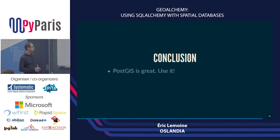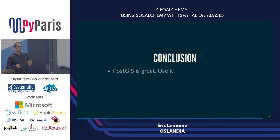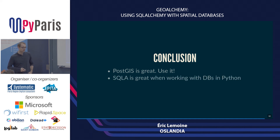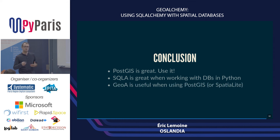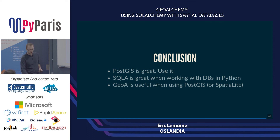In conclusion, PostGIS is great if you have localized data — points, polygons, or lines that you want to store and exploit. PostGIS is a wonderful tool and I would recommend it. SQLAlchemy is also great when working with databases in Python — instead of manipulating strings it can be very beneficial, especially when your code base grows. And GeoAlchemy is just a thin layer on top of SQLAlchemy that you can use to make your life easier when using PostGIS or SpatiaLite.